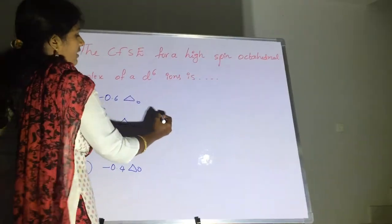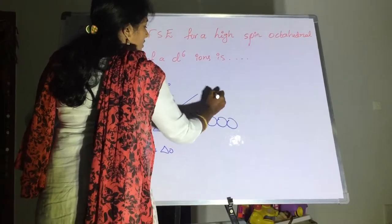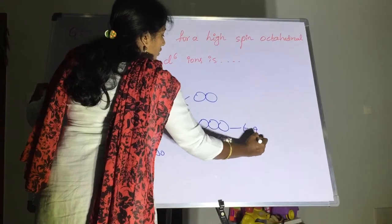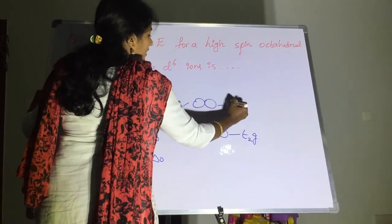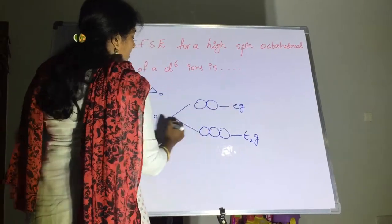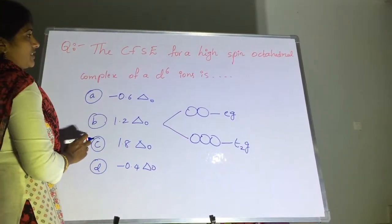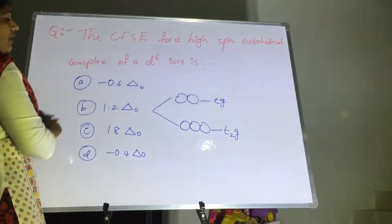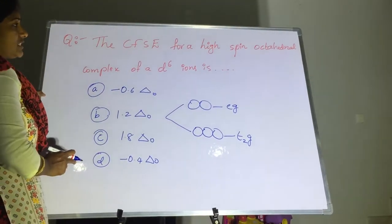In case of octahedral, the orbital splitting will be like this. T2g orbitals are staying down, these three orbitals have got the t2g triply degenerated. These two orbitals are called eg, doubly degenerated. These two sets of orbitals will be present when octahedral complex was taken. So when ligand is approaching, five d orbitals will split into these two sets.